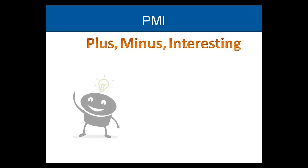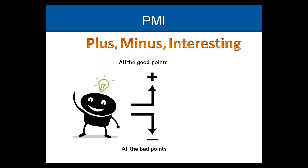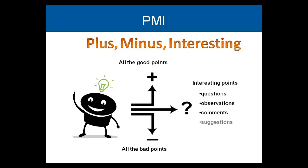Instead of thinking about everything at once, we separate out three strands. Plus — all the good points. Minus — all the bad points. Interesting — the questions, observations, comments or suggestions that are not plus or minus but interesting.